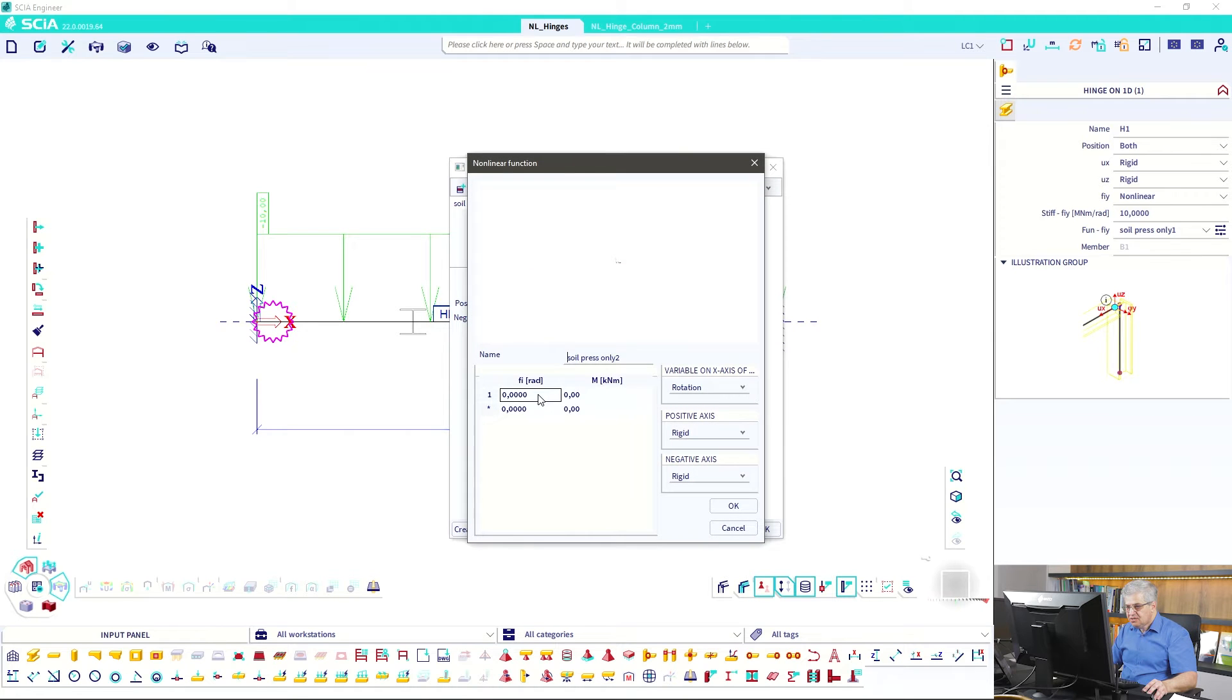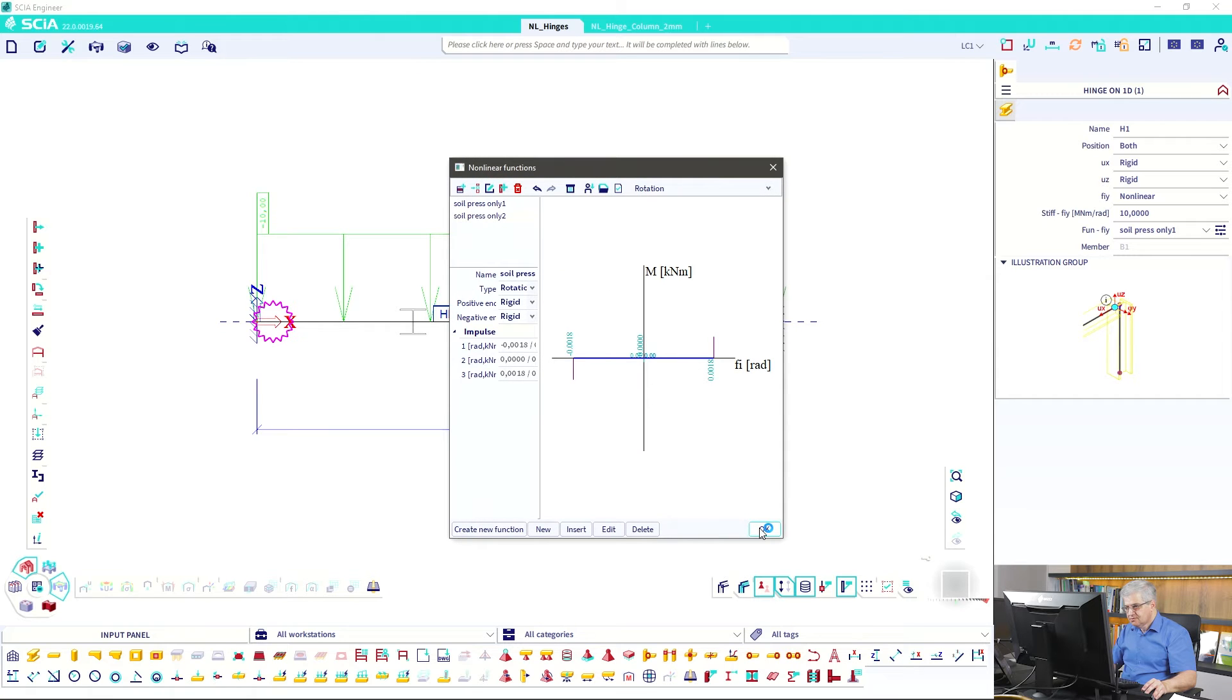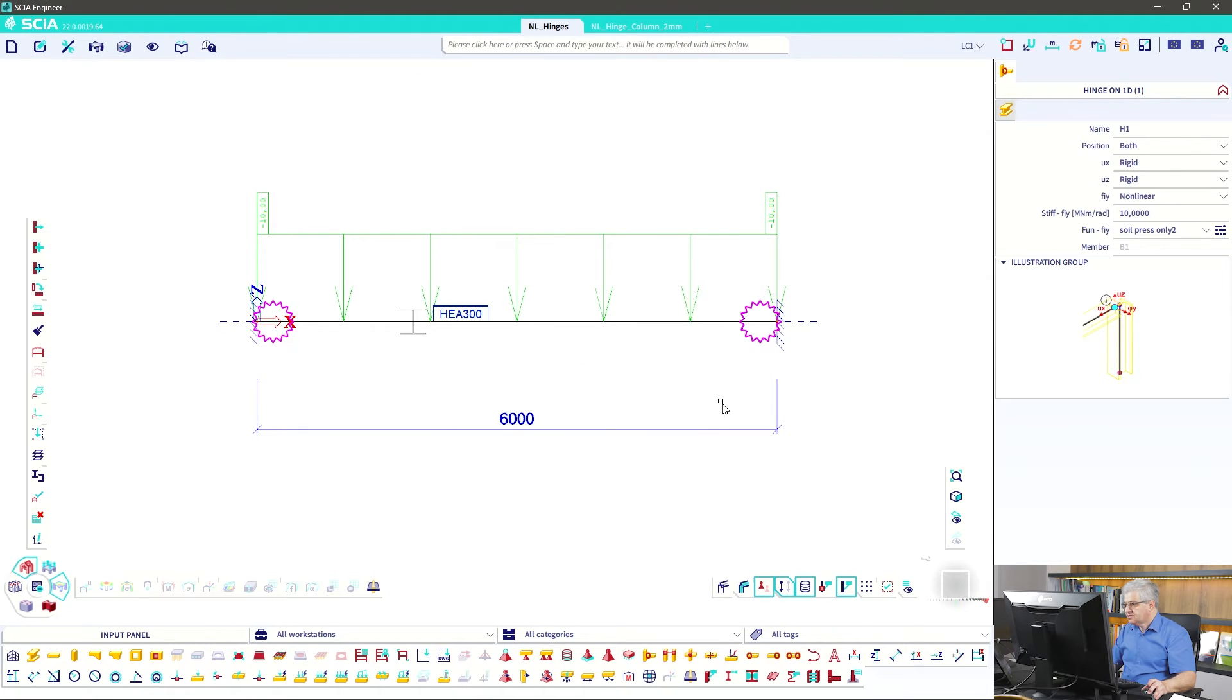So our hinge will be - I will create a new hinge which has a rotation of minus 0.0018 for zero resistance, and then we go to the right side to 0.0018 also without resistance, and from this point we go vertical. And this is my hinge. That's everything.